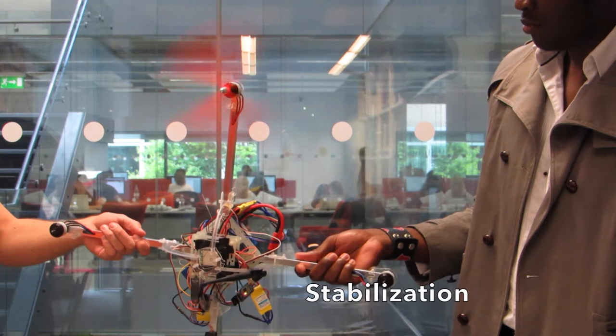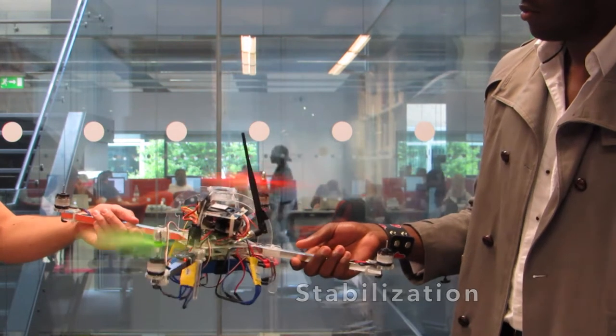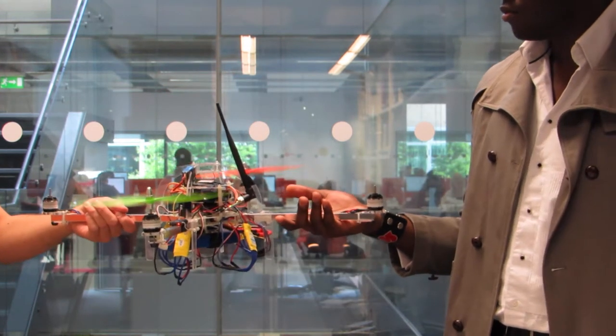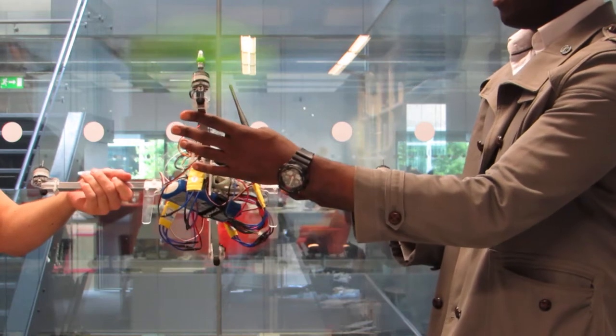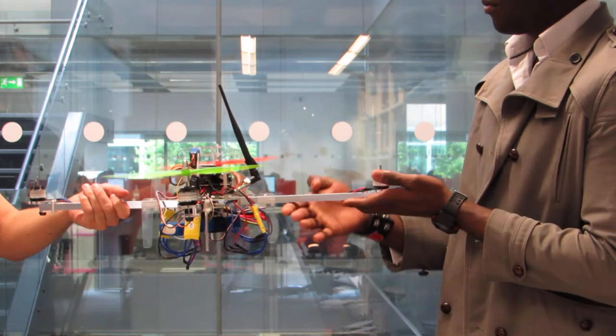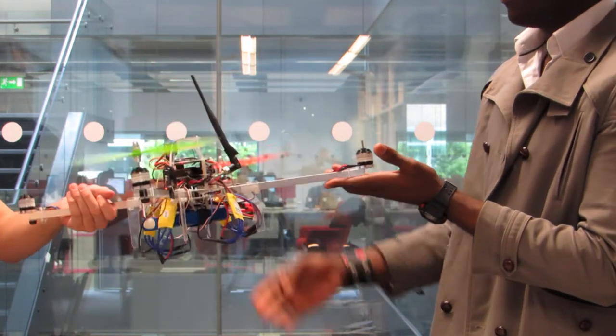Here, we showcase its ability to balance itself. The drone is put on its side and turned on. It immediately senses it is in the wrong position and corrects its orientation. You can hear the motor spin up to counteract the external force from my hand.